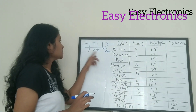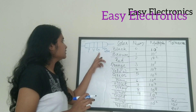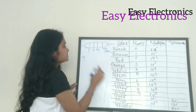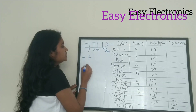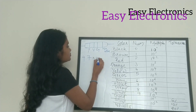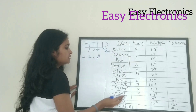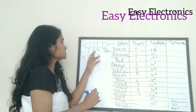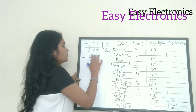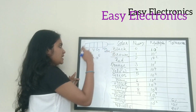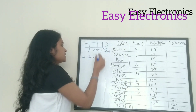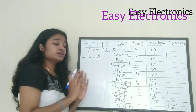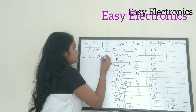One more example: yellow, violet, green, and no color. Yellow is 4, violet is 7, giving 47. Green multiplier is 10 raised to 5. No color tolerance is ±20%. The first two colors are the number, the third is the multiplier, and the fourth band is tolerance. So the tolerance is 20%, meaning ±20%.